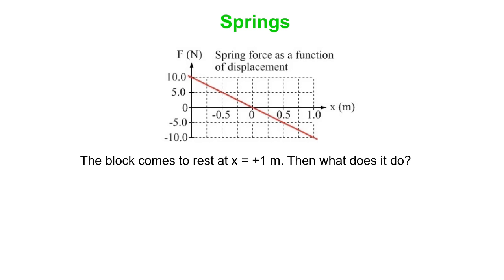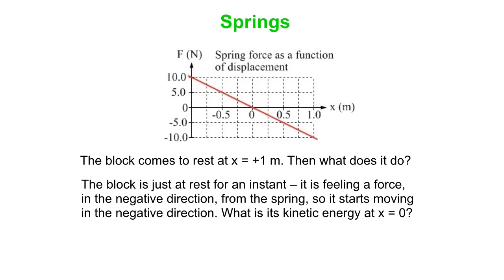So now the block comes to rest at x is plus 1 meter. What happens next? So of course what happens is that the block is only at rest for an instant. It's feeling a force in the negative direction from the spring, so when it gets to x is 1, comes to rest, it starts moving in the negative direction because it's feeling that force in the negative direction.